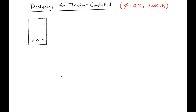If we're looking at a similar section as to what we've looked at before — just a rectangular section with tension reinforcement of area AS — we have our compression block with a depth of C and a distance from the centroid of our compression block down to the steel of D minus C.